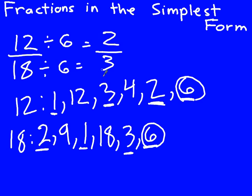Isn't 2 thirds a smaller numerator and smaller denominator than 6 over 9? This is the fraction in its simplest form. To find it in simplest form, you write out all the factors first, then find the greatest common factor in both the numerator and denominator, then divide both the numerator and denominator by that greatest common factor. When you do that, you will always get the fraction in simplest form.